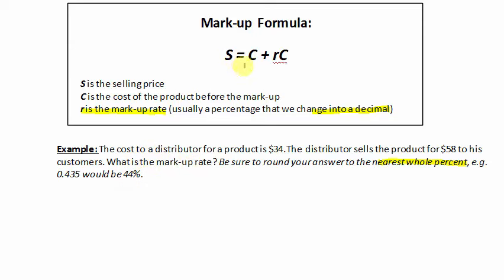So using the formula above, S is the selling price. The selling price is the price we sold to the customers, which was $58. C is the cost in which the distributor purchased the product, which was $34. And R is the markup rate, which we're trying to find. So that is unknown.